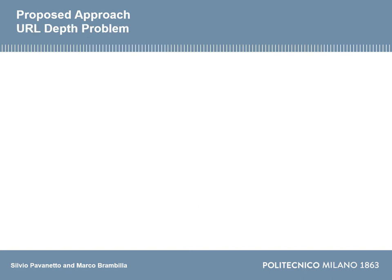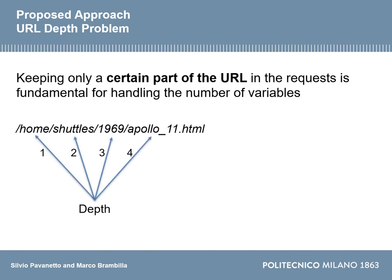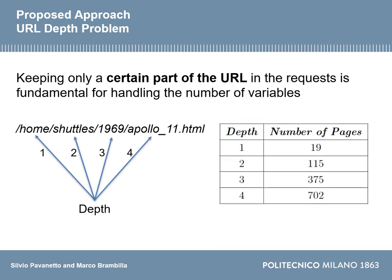One challenge we face is the URL depth problem. To produce high-quality weblogs, we must make correct predictions about the next page. With a small number of pages it is easier to predict the correct one, but with many different pages it becomes a difficult task. For example, with a depth equal to one we have 19 pages in the website, while with a depth equal to four the number of pages increases to 700. For this reason it is important to keep this variable in consideration during the evaluation of every algorithm.